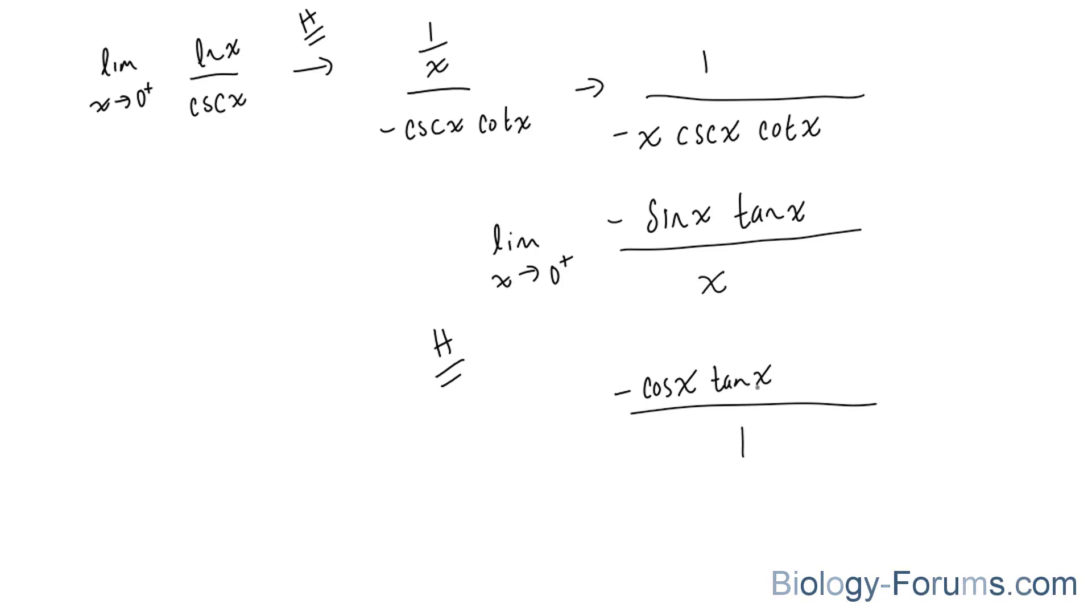And at the same time, I have to find the derivative of tangent x. So the derivative of tangent x is equal to secant squared x, and sin x remains the way it is.